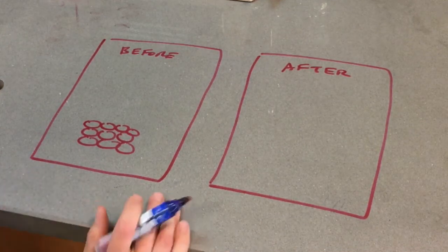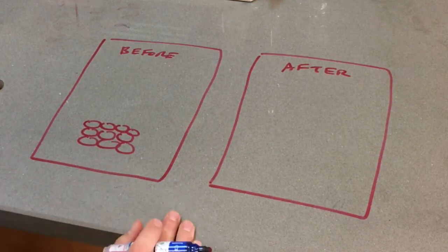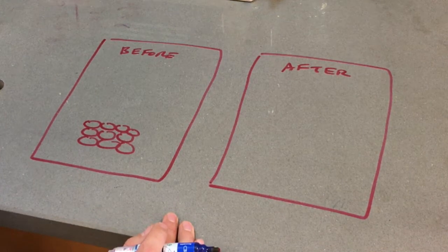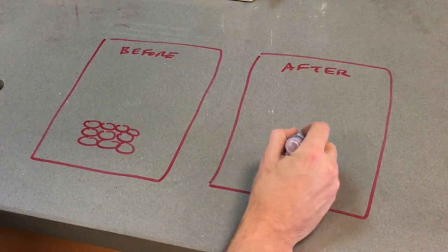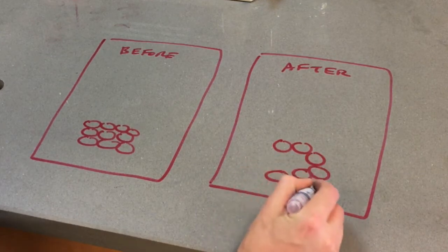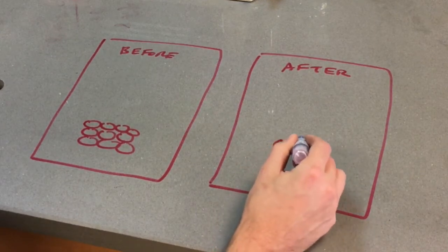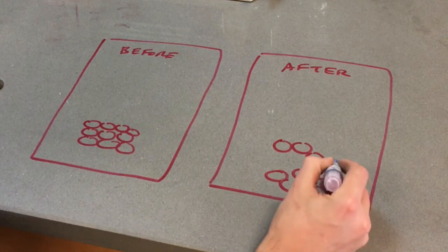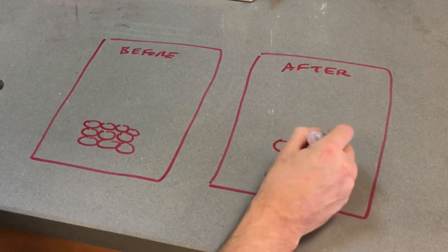And then if you spread out those particles, what would that look like? Now, if you spread out, maybe we change the way that the particles are together. 1, 2, 3, 4, 5, 6, 7, 8, 9, 10.